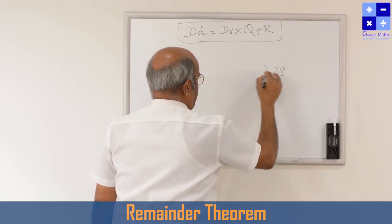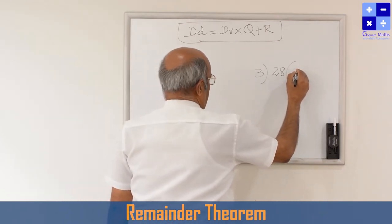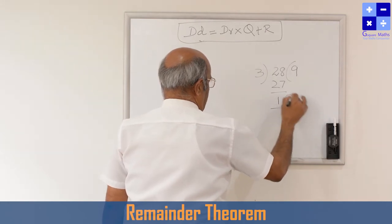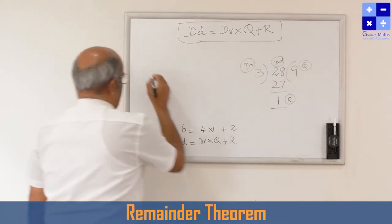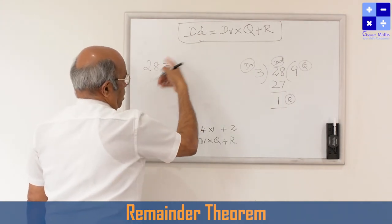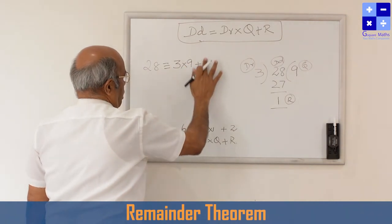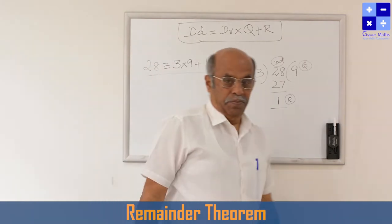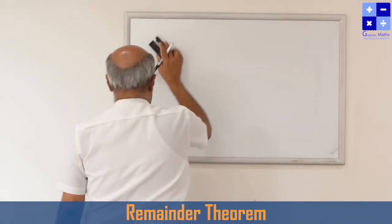Let me take another example: divide 28 by 3. 9 threes are 27, so the quotient is 9 and the remainder is 1. Now see the relation: 28 = 3 × 9 + 1, that is 27 + 1 = 28. This verifies the divisor algorithm. The same knowledge from the number system we are going to apply to algebraic expressions and polynomials.